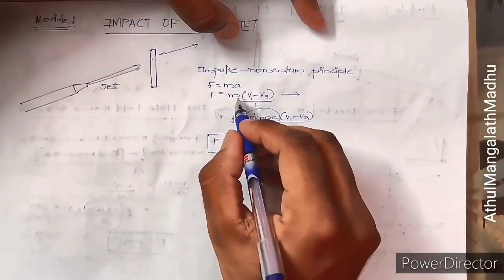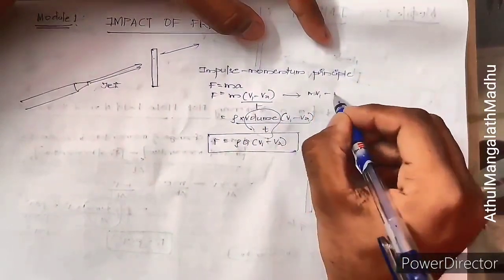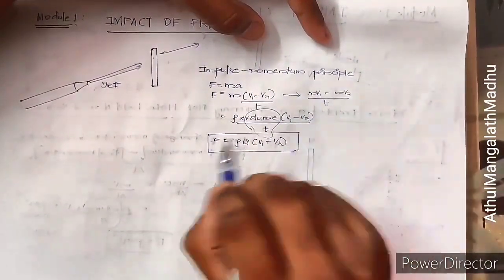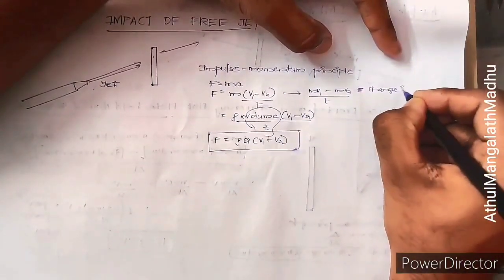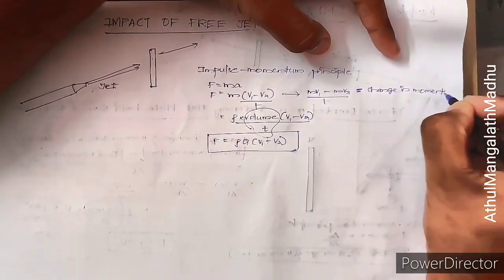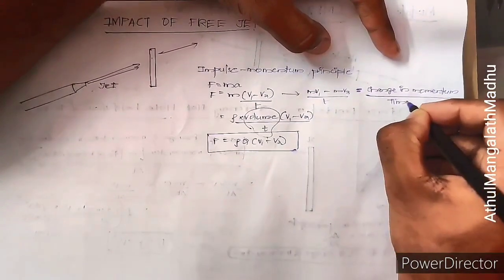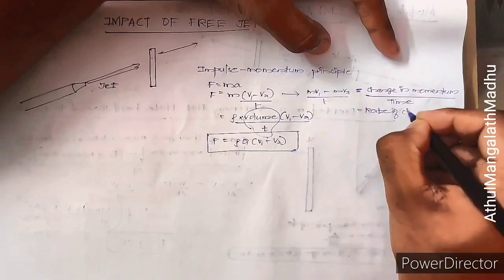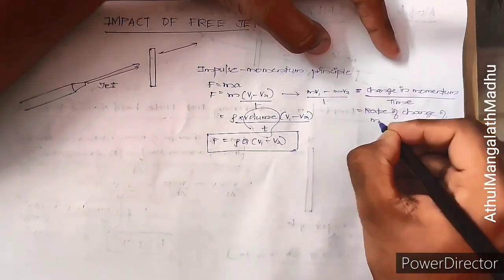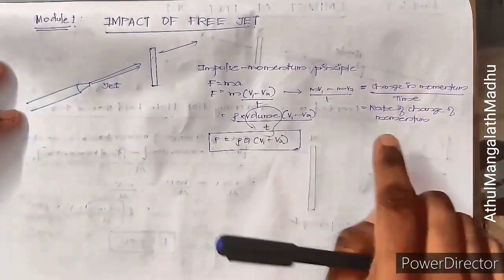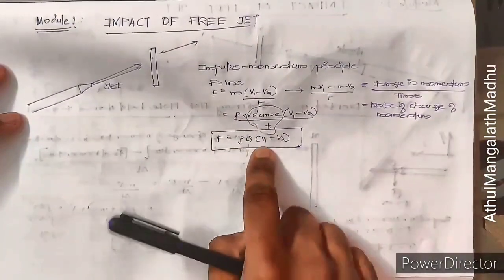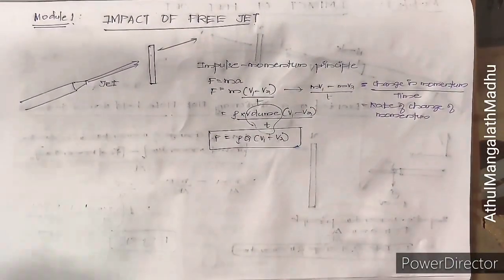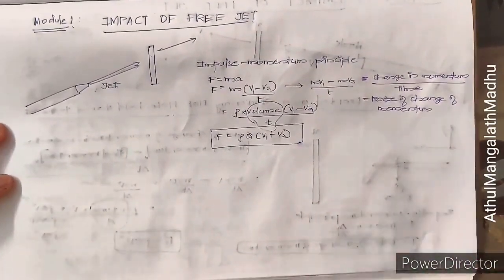Looking at that equation: m·v1 and m·v2 are momenta, so this is the change in momentum divided by time — that is, the rate of change of momentum. Therefore the force due to impact equals the rate of change of momentum. In equation form: F = ρ·Q·(initial velocity minus final velocity). We will now deal with different types of free jet scenarios one by one.